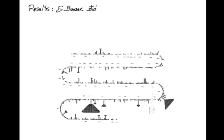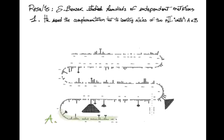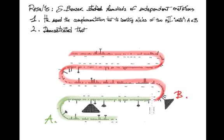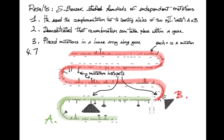Benzer studied hundreds of independent mutants. By the complementation test, he grouped them in the A and B gene units that make up the R2 locus. He demonstrated that recombination can take place within the gene. He placed the mutations in a linear array along the gene. He actually found that some sites are hotspots for mutations.